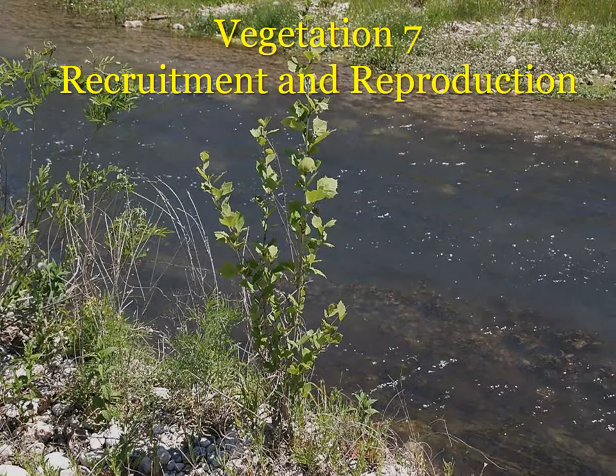Item seven on the checklist has to do with the recruitment and reproduction of riparian plants. You're forcing yourself to look specifically for young plants, young saplings, young shrubs, new plants of sedges and grasses. A young sycamore indicates reproduction is taking place — it's a really vital aspect of healthy riparian vegetation that it's actively reproducing.